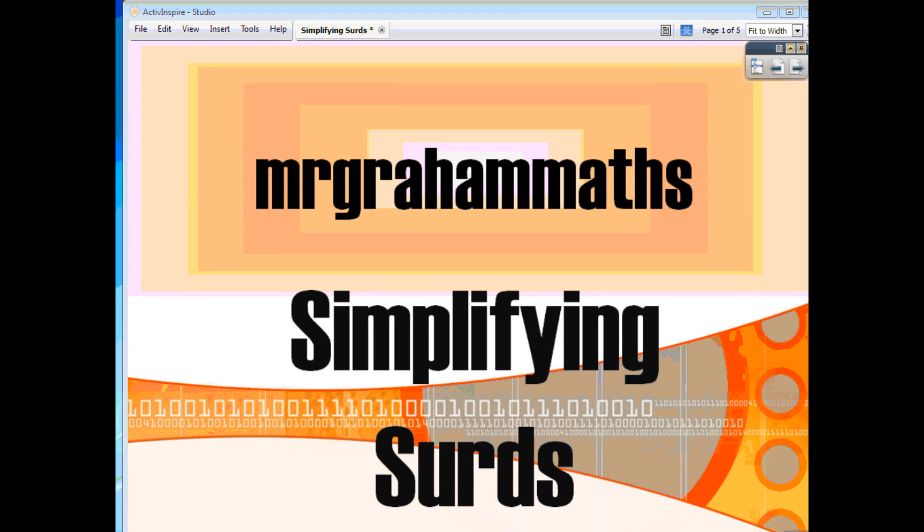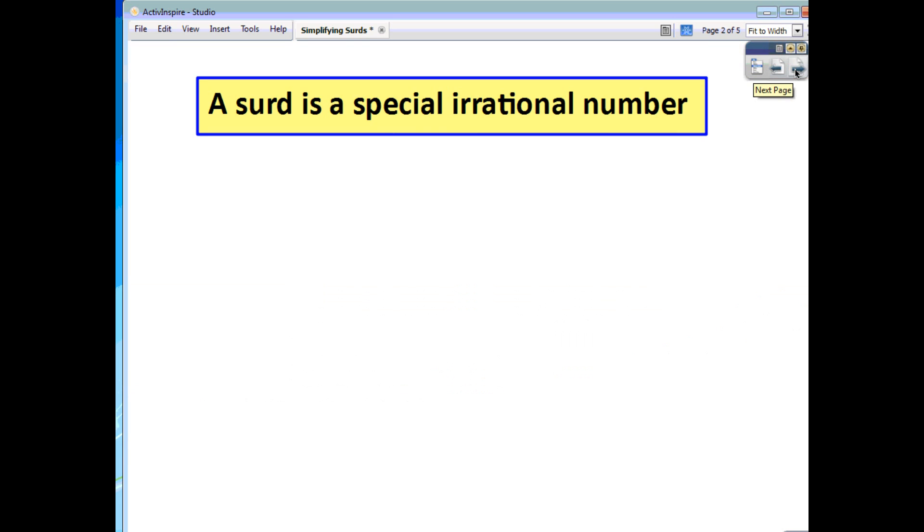In this video we are going to have a look at how to simplify surds. Now surds are just special types of irrational numbers so they can't be written as fractions and they are written in such a way as to preserve the accuracy of the number.